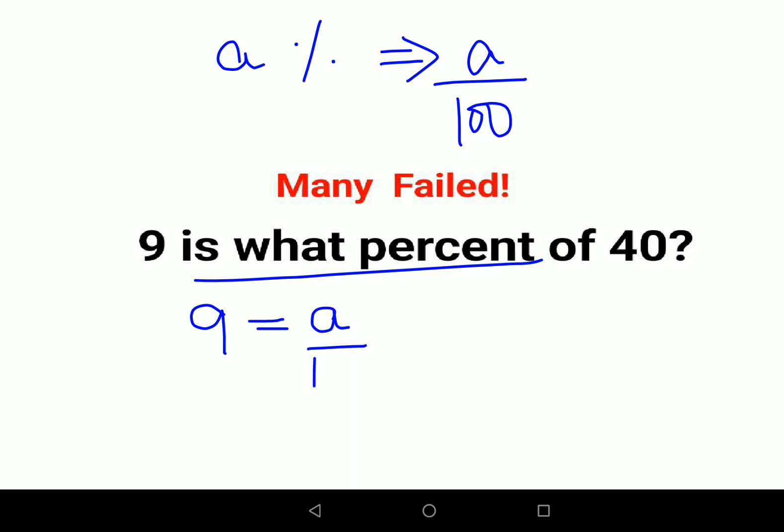So we will do this: A upon 100 into 40. Next what we will do is, the zeros are cancelling and then 4,